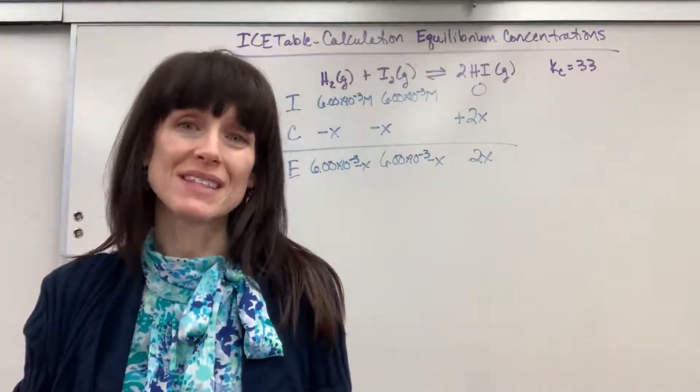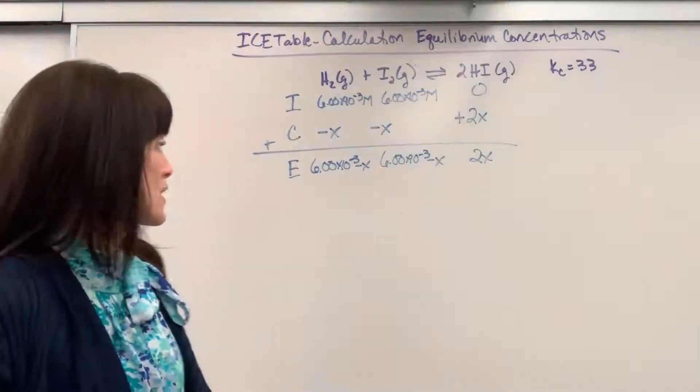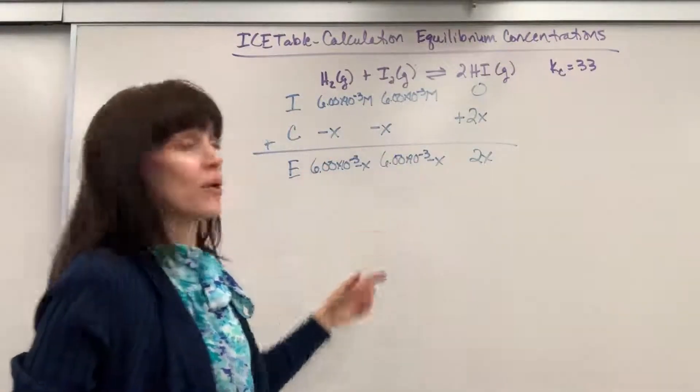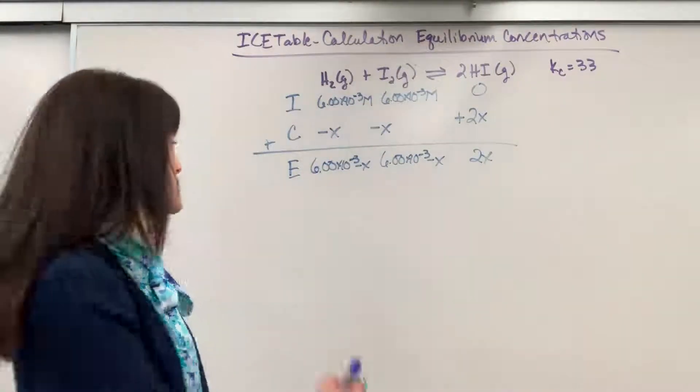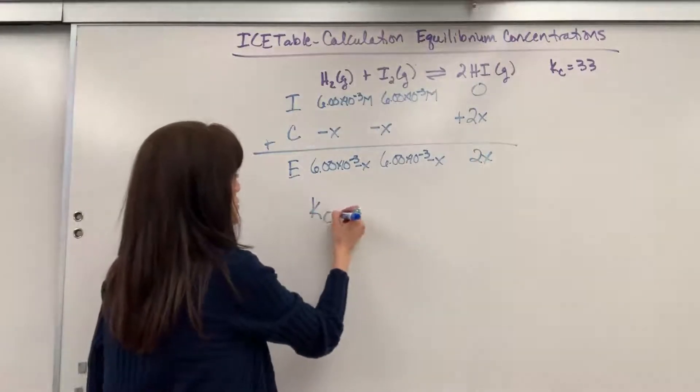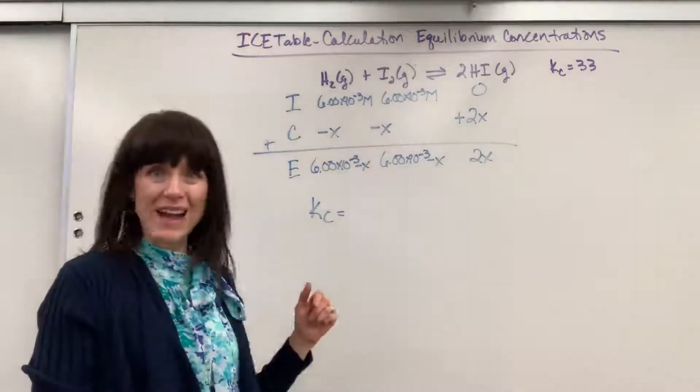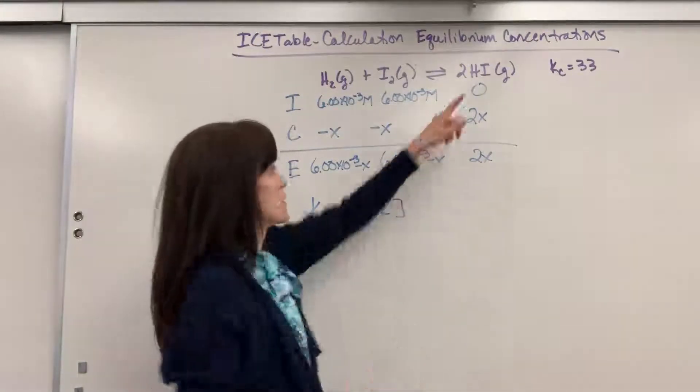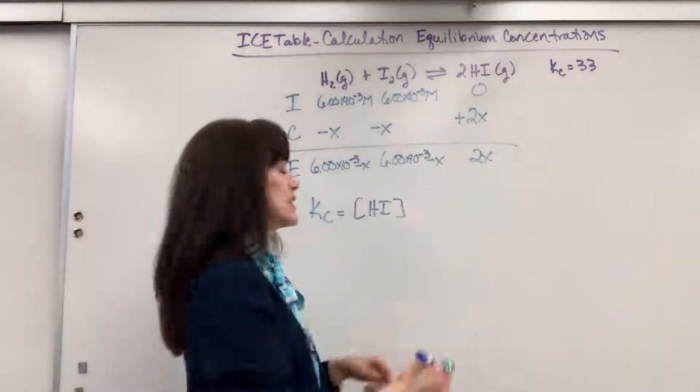Okay, now we can plug this into our equilibrium expression so that we can solve for X. And then we'll be able to figure out what are the equilibrium concentrations. So the equilibrium expression is products divided by reactants. And be really careful.